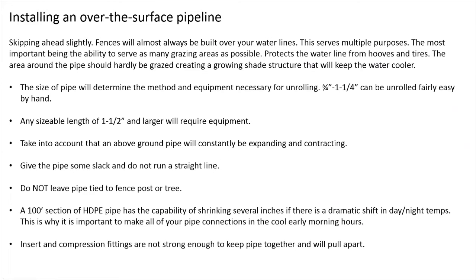Installing an over-the-surface pipeline: fences will almost always be built over your water lines. This serves multiple purposes — most importantly the ability to serve as many grazing areas as possible, protect the water line from hooves and tires, and the area around the pipe should hardly be grazed, creating a growing shade structure that will keep the water cooler. Cool water is very important. A thousand feet of two-inch pipe baking out in the Mississippi sun is a massive volume of hot water.